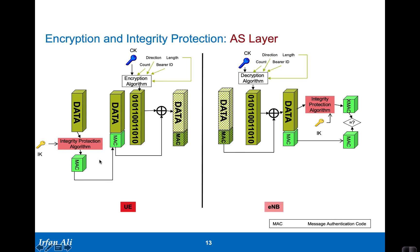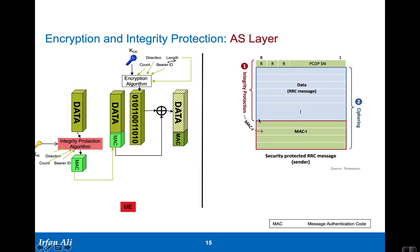For the integrity protection part, the same parameters are used except there is no length field, because the MAC is a fixed-length 4-byte number. Looking at the PDCP message: the RRC message has a PDCP header with a 5-bit count. You first perform integrity protection to produce the MAC, then take the entire data plus MAC and cipher it. This whole ciphered message is then sent over the radio.